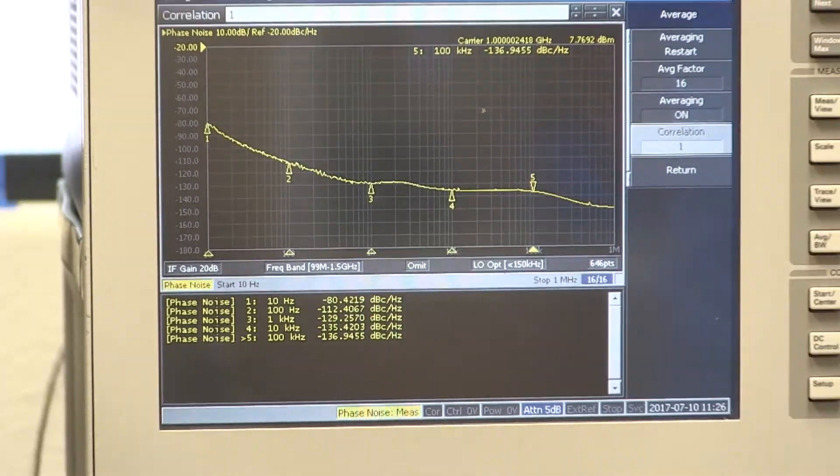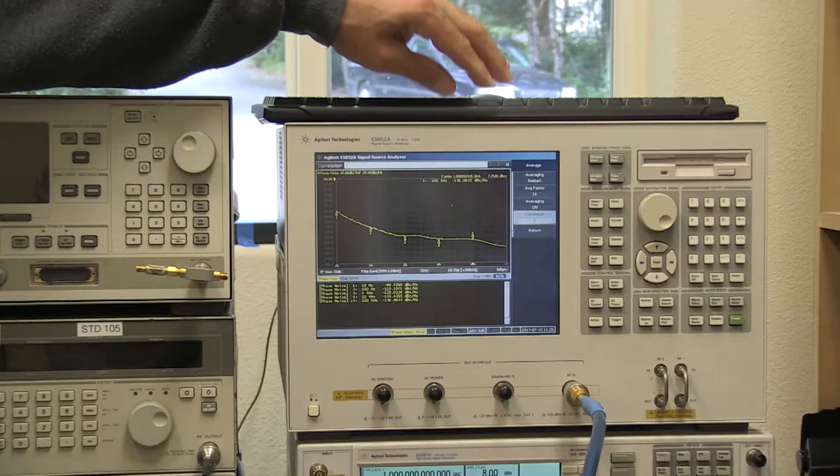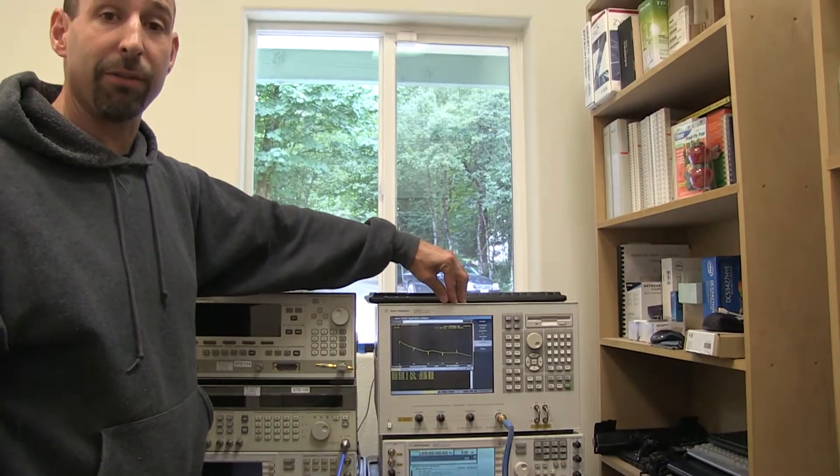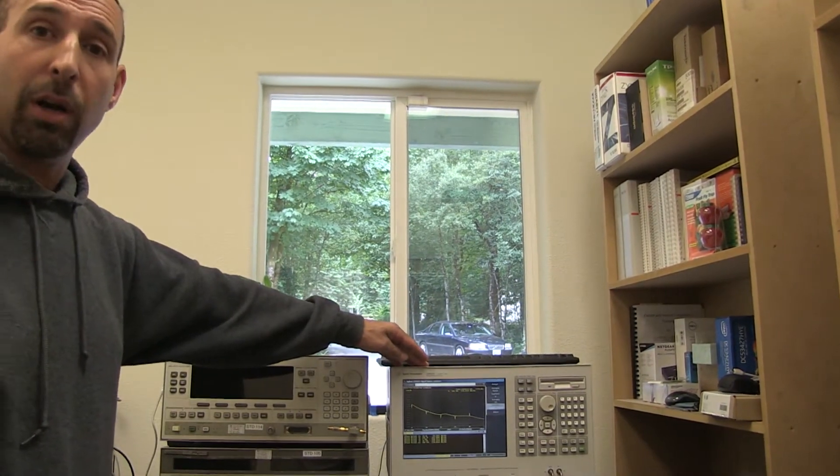So this is an Agilent signal source analyzer used to measure phase noise. This box, new from Agilent, would go for around $95,000. Very expensive instrument. Not a lot of labs have that kind of money for one measurement. So we wanted to show today we're going to use the SM200 from Signal Hound.